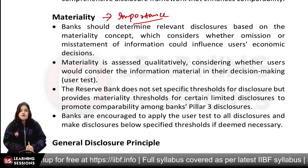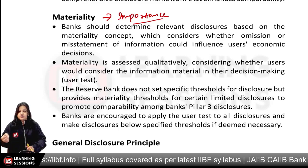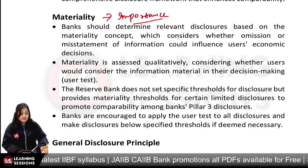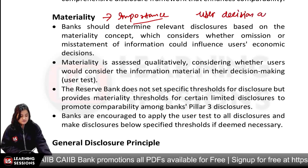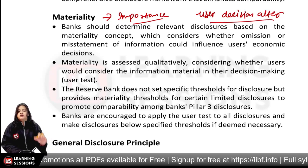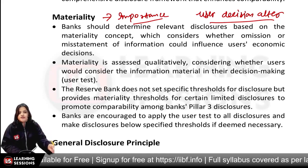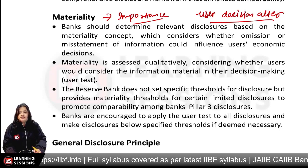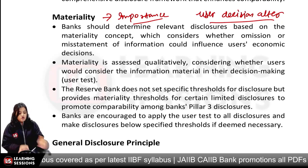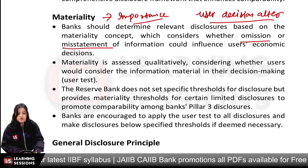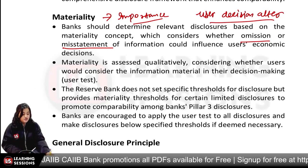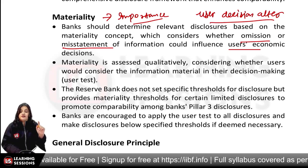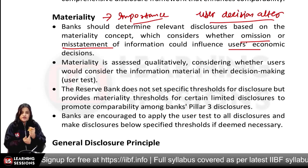If there is a loss or fraud but it is a small amount, why should we make a point about that? That amount is included only if it can alter a user's decision. Information which can alter a user's decision is considered material. The purpose is that every material information must be told — you should not omit any material information.